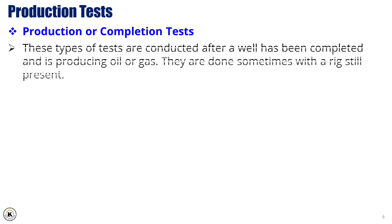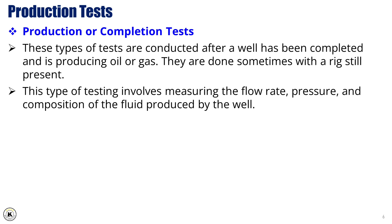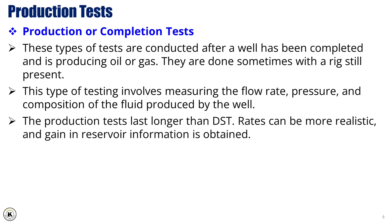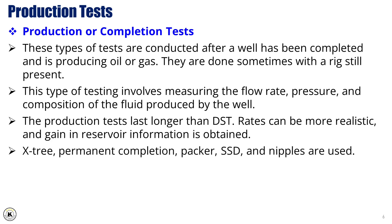Production or Completion Tests are conducted after a well has been completed and is producing oil or gas, and they are sometimes done with a rig still present. This type of testing involves measuring the flow rate, pressure, and composition of the fluid produced by the well. Production tests last longer than DSTs, and rates can be more realistic, with greater gain in reservoir information. A Christmas tree, permanent completion packer, SSD, and nipples are typically used during the test, offering detailed insight into well performance and helping evaluate production potential over a longer time frame.